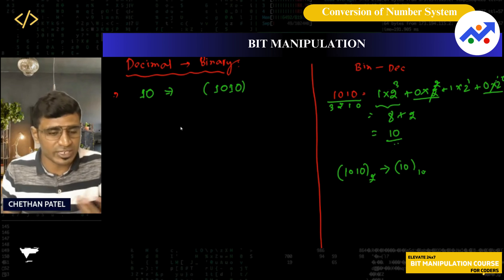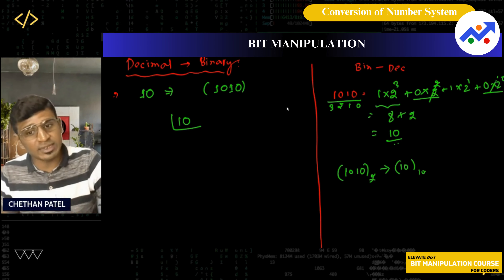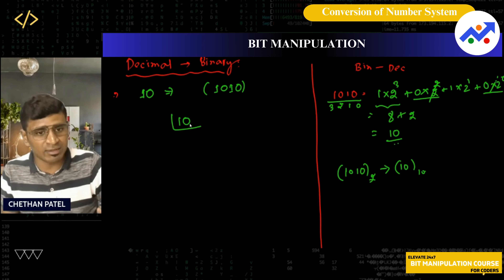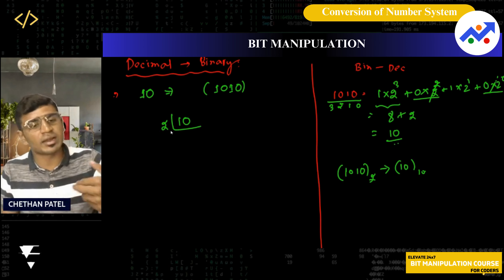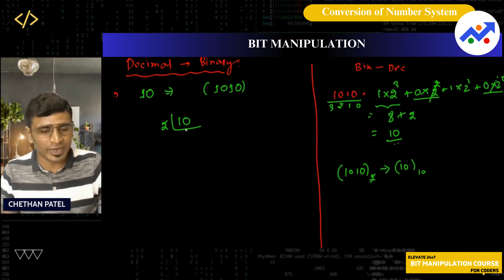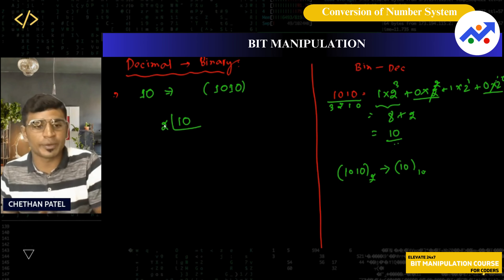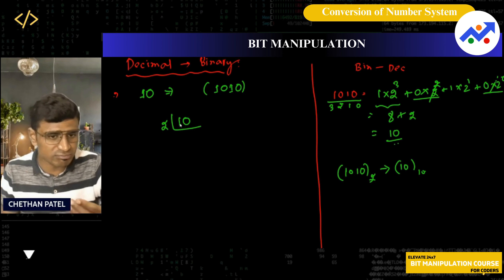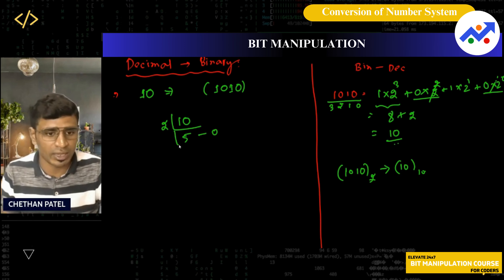This is a very easy method. First, you take 10 and you need it in the binary number system. What you do is start dividing this 10 continuously by 2 — it's something like binary factorization. Every time you divide, whatever remainder you get, you note it down — whether it is zero or one. So I divide 10 by 2: two fives are ten, and I get zero as the remainder. Note that down.